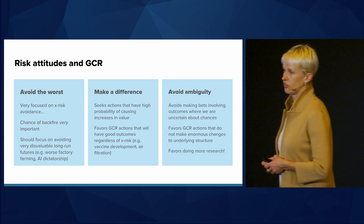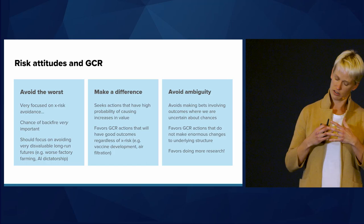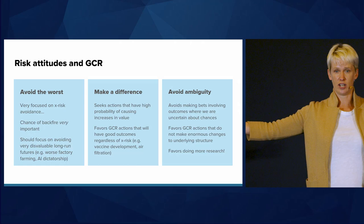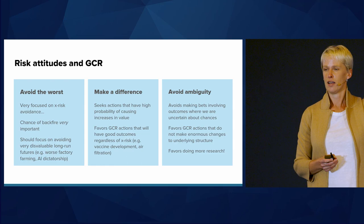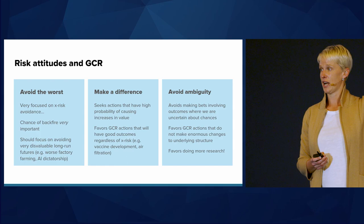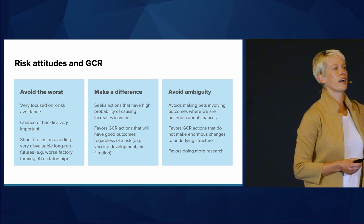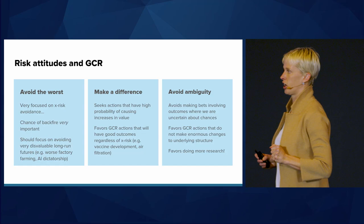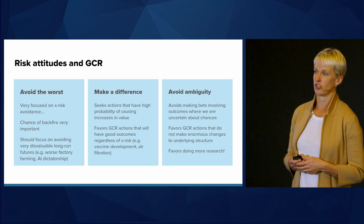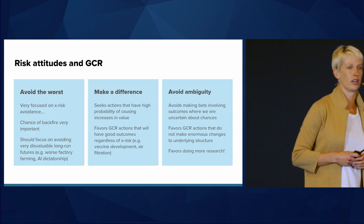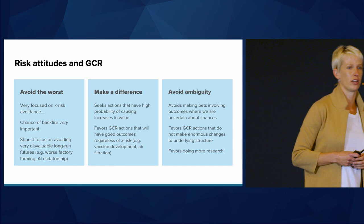If what you're worried about is cases where you don't have any effect or where you make things worse, you might want to favor GCR actions that have a high probability of good outcomes, even if there is no existential risk waiting in the wings. And if you don't like making bets on uncertainty, sometimes x-risk actions have high EV because we don't know what's going to happen, and we give some small credence to a huge astronomical outcome. But if that potential value is arising from ignorance about what might happen, you're not going to be swayed by that. This attitude also favors doing more research — paying money to resolve your ambiguities and become more certain.